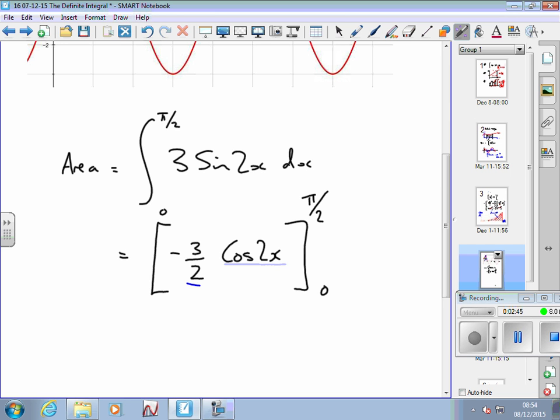And then I'm going to work out what the cos of 0 is and times that answer by minus 3 over 2. So actually, that minus 3 over 2 is common to both terms. Any constant that when you've done your integral could actually come outside the bracket.